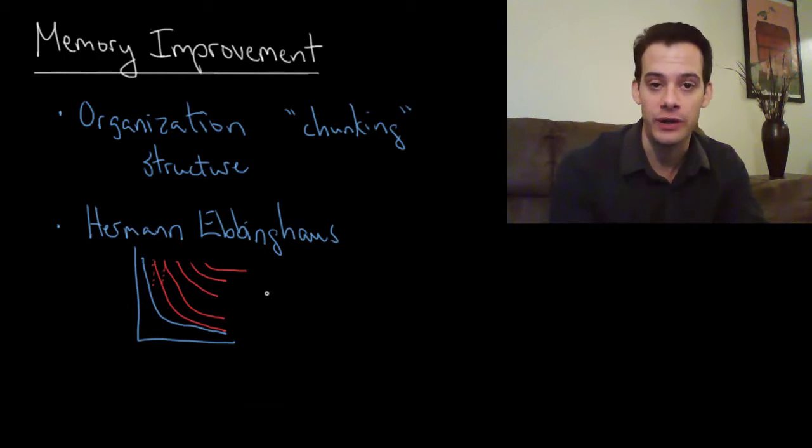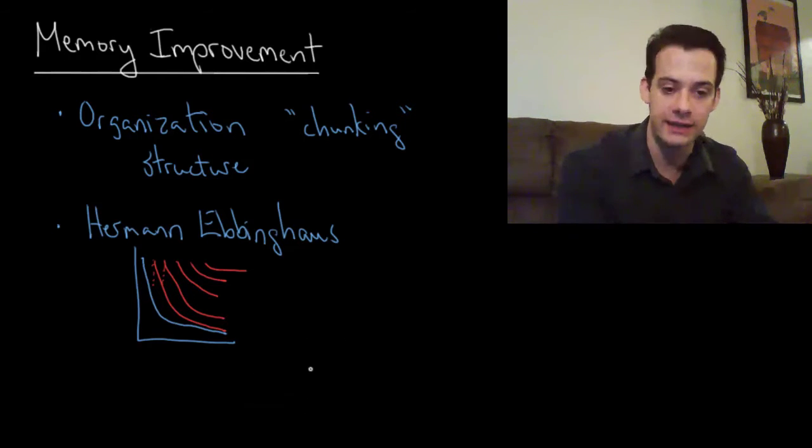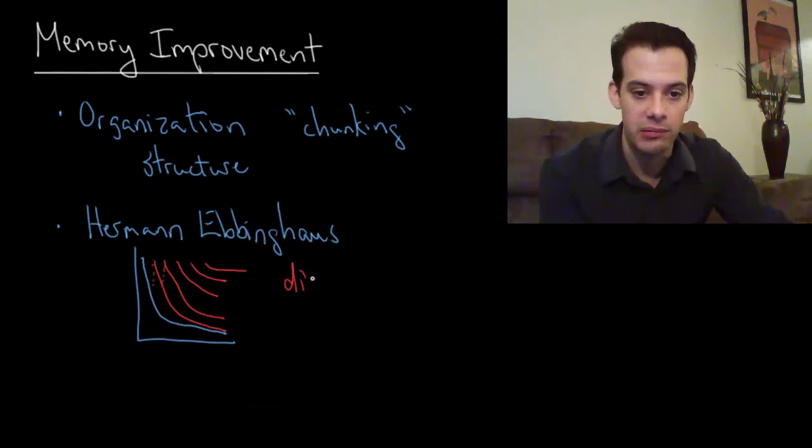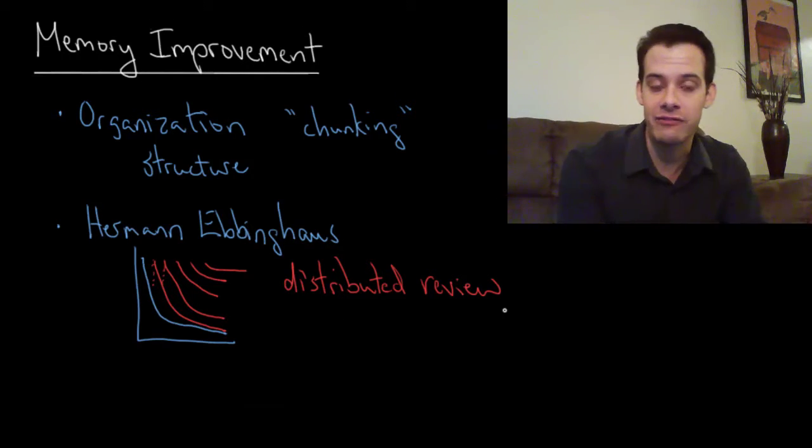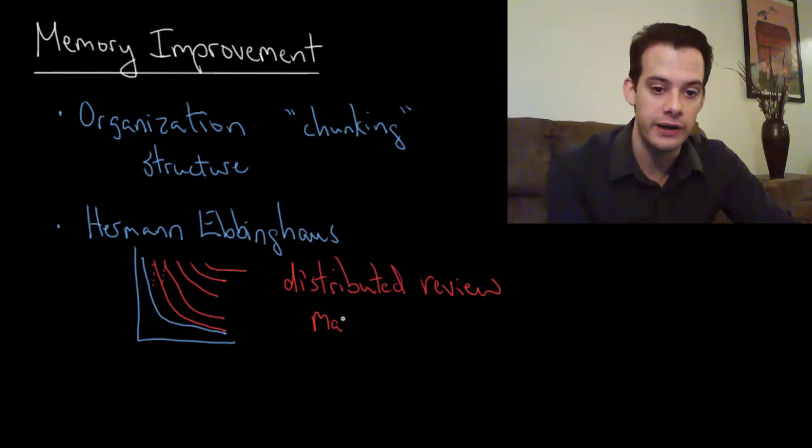That's really ideally what you want when you're studying for a class. You don't want to just know it for an hour. Hopefully you want to know the information long term. We can see from this forgetting curve that the way to do that is to review repeatedly. This is called distributed practice or distributed review. This is more effective at remembering information long term compared to what we want to avoid which is known as massed practice. This is like cramming.